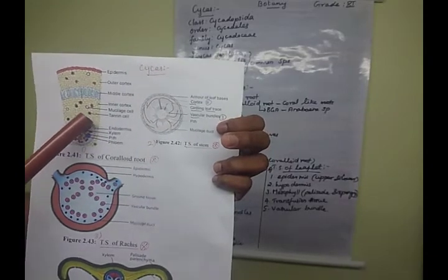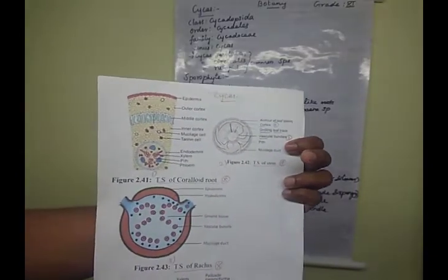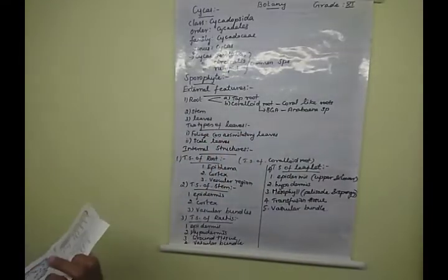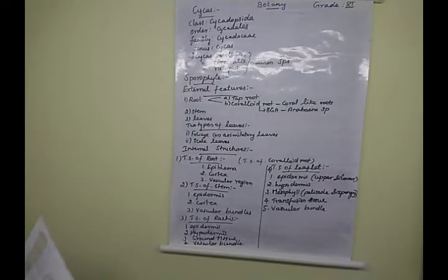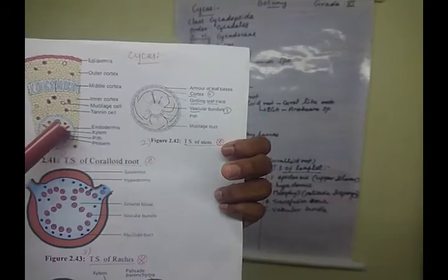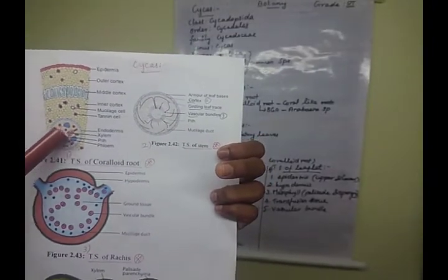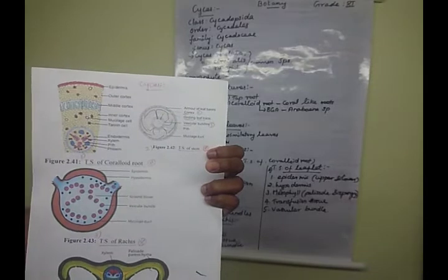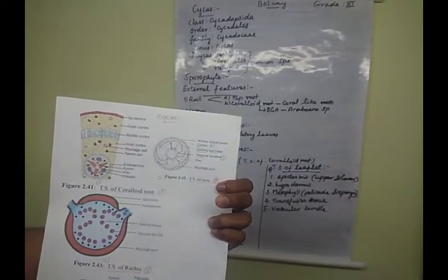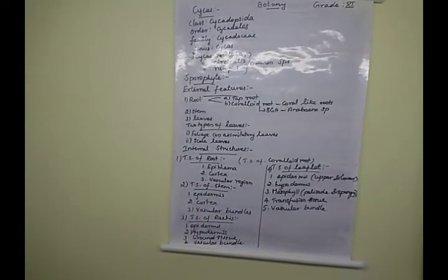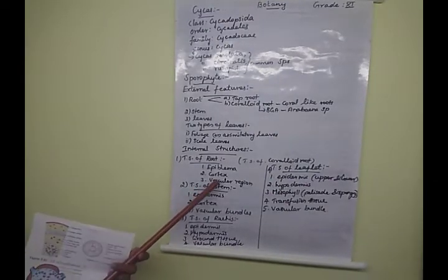The innermost layer of the cortex is called the endodermis. Inside the endodermis, there is the presence of many layers of pericycle. Inside the pericycle, there are xylem and phloem elements. The xylem and phloem elements together with the pericycle form what we call the stele or vascular region.